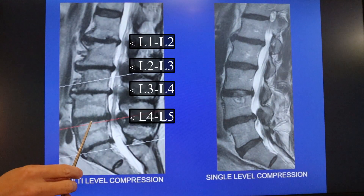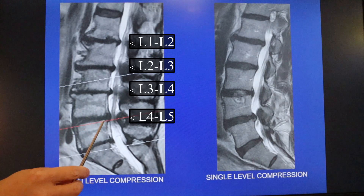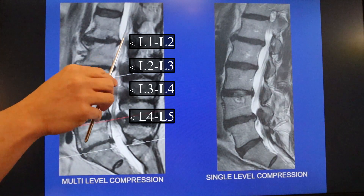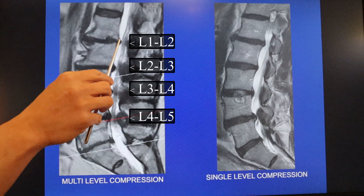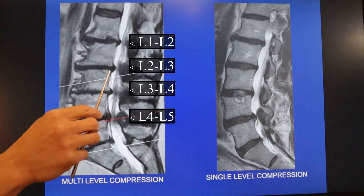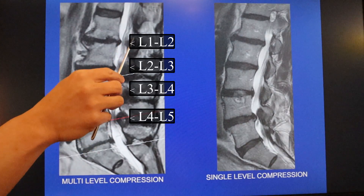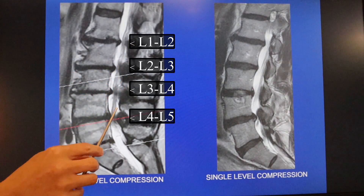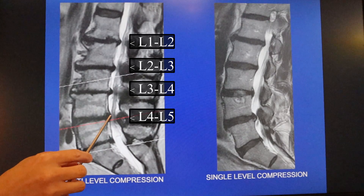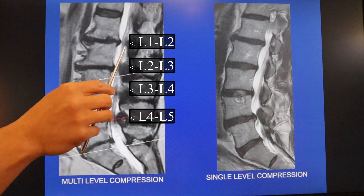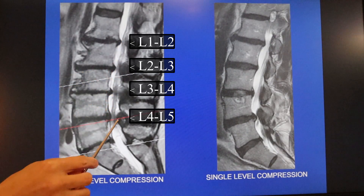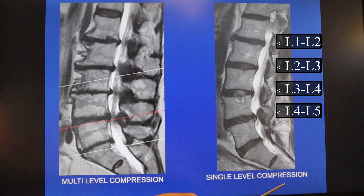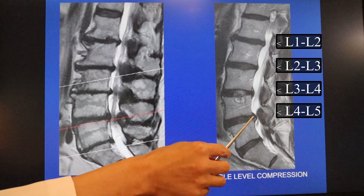The left-hand image demonstrates a patient with multi-level compression. At L5, L4, L3, and L2, you can see every single level has a degree of hourglassing and pinching — bone spur, bone spur, bone spur, bone spur. The L4-L5 level is the worst, but there is definitely multi-level compression here. The right-hand image shows that all the levels look pretty normal except for the single level at L4-L5.